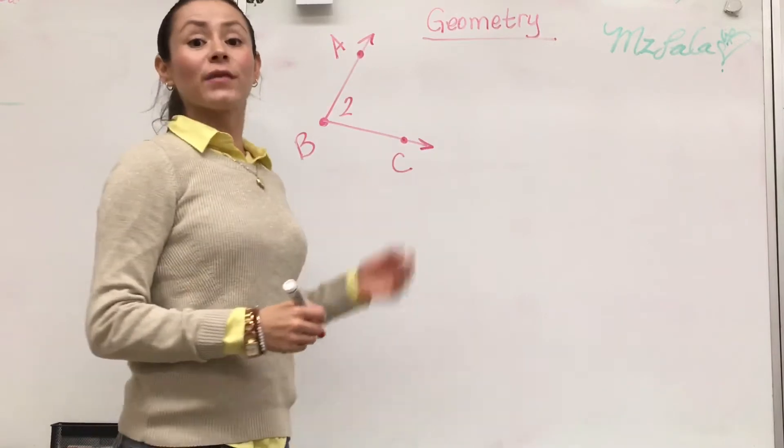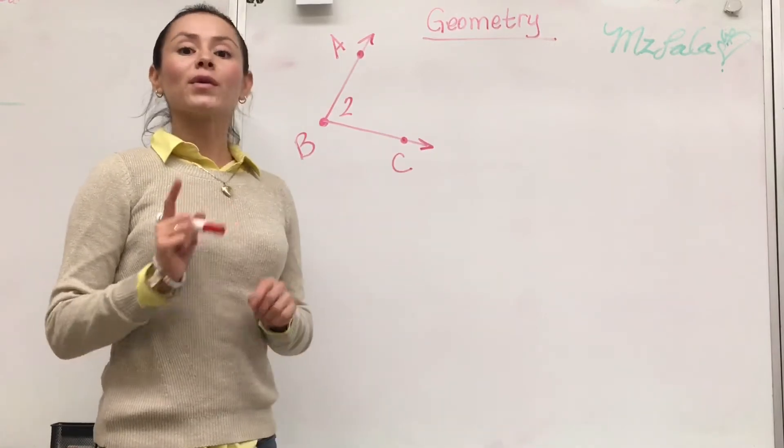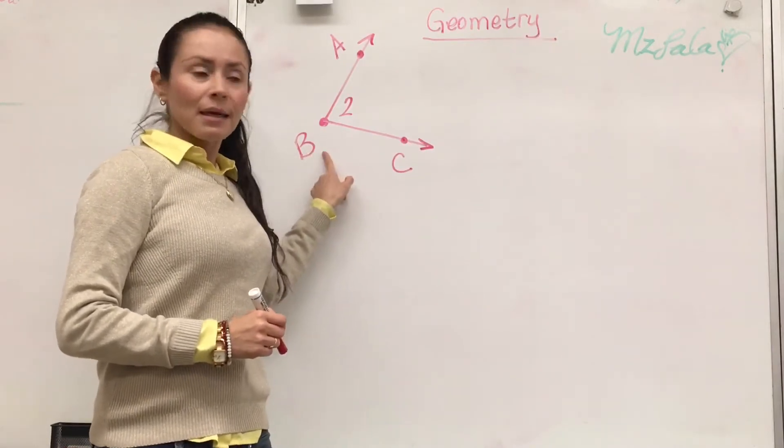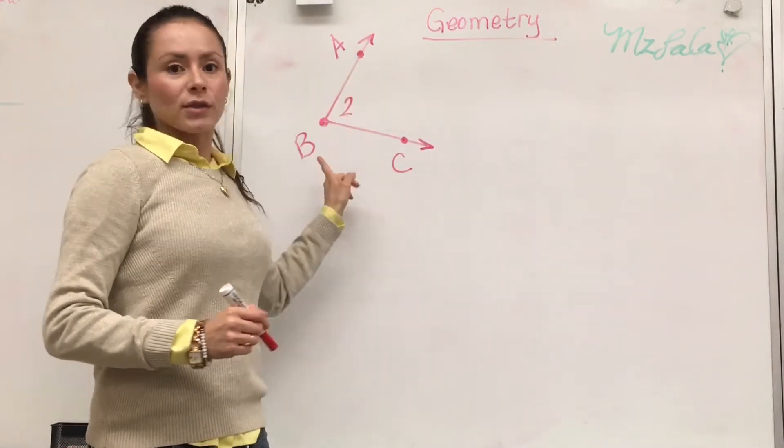So let's start looking at this figure that we have right here. If you notice, this figure has a common endpoint, which we're going to call B, and there's rays to that endpoint.